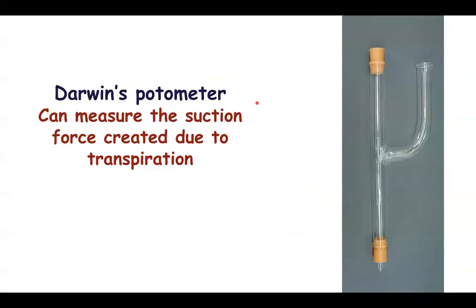The third potometer is called Darwin's potometer. In the case of Darwin's potometer, this measures the suction force created due to transpiration. When we say suction force, it basically means the amount of transpiration pull created. Tall trees have leaves on top in the canopy and these leaves require water. The leaves are transpiring water and performing photosynthesis, and when they do so, they create an upward pull of water — a transpiration pull. That is called suction force. So Darwin's potometer basically helps to measure the suction force created due to transpiration.